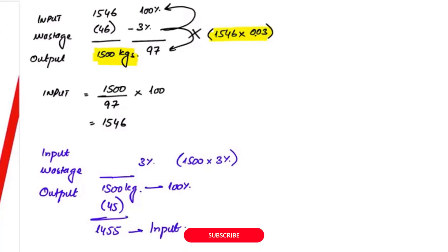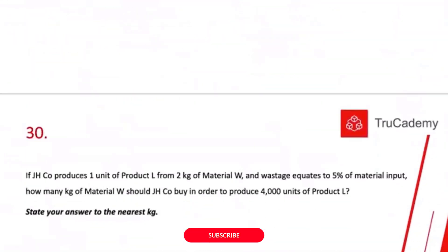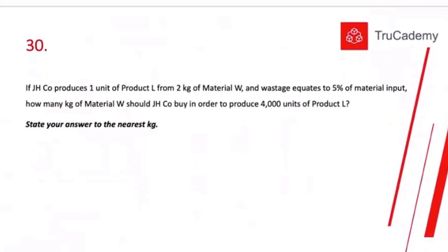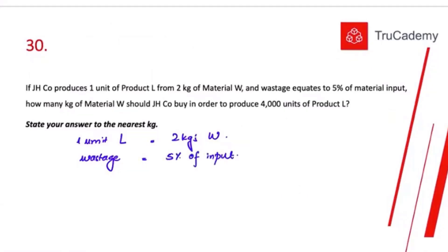Next question: JF Co produces one unit of Product L from two kilograms of material W. To produce one unit of Product L we need two kilograms of material W, and wastage equates to 5% of material input — again, wastage is 5% of input, not output. How many kilograms of material W should we order to produce 4000 units of Product L? The answer: 8000 ÷ 0.95 = 8421 kilograms input.